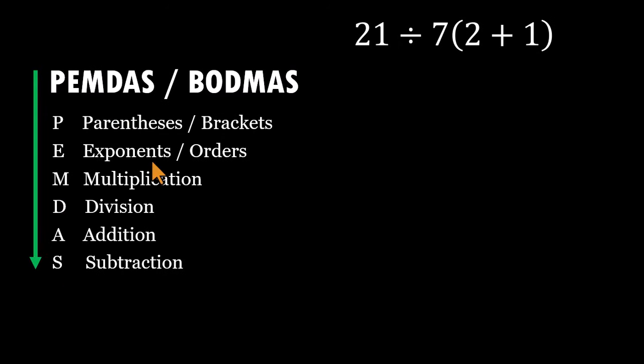Right away, the parentheses stand out. So we look inside them first. Inside the parentheses, 2 plus 1. That gives us 3. In math, a parenthesis placed like this implies multiplication.